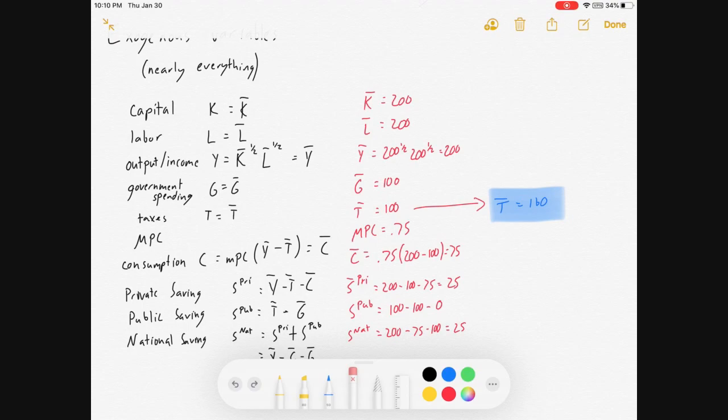Okay. Our model can't account for the tax change, but if a question I ask you on a test just says taxes change, how do you treat your model after that happens? If there's just some exogenous shock to the model? Well, let's see. The stuff before that never changed. We still have 200 capital, 200 labor, 200 output, 100 government spending. That stuff's all the same. MPC is still the same.